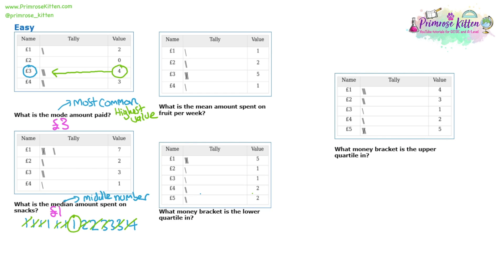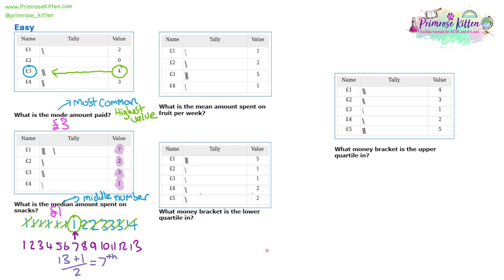How can we calculate that without producing such a large list? We need a different method. We have 13 numbers altogether — you can add up the values: seven plus two plus three plus one gives you 13. To get from 13 to the seventh value (the middle), you take the total, add one to it, then divide by two. That gives us the seventh value. The seventh value corresponds to one of the ones, which is the middle number. We add one because sometimes you might have two numbers in the middle, allowing the formula to return a 0.5 position.